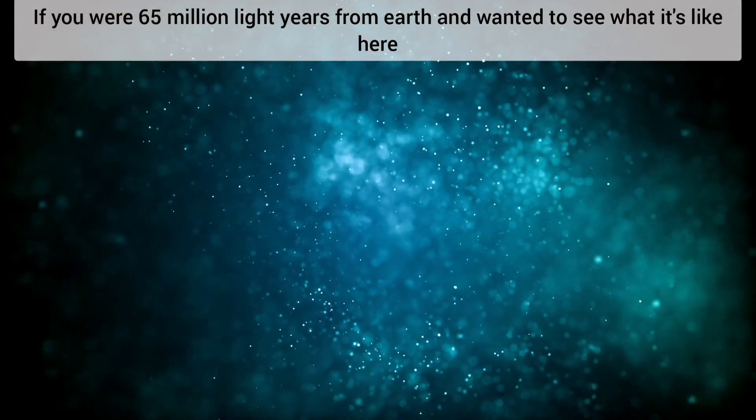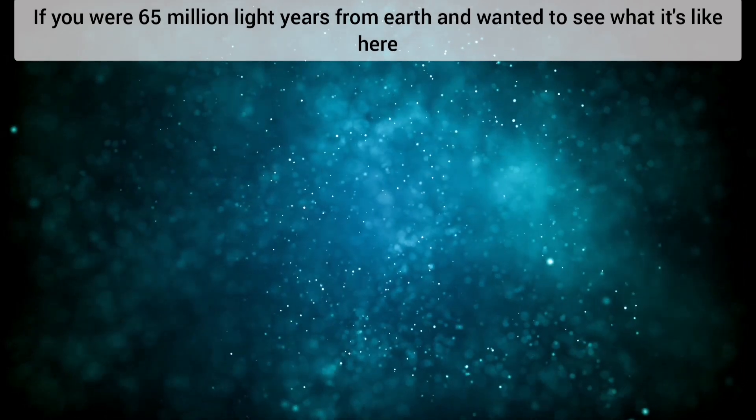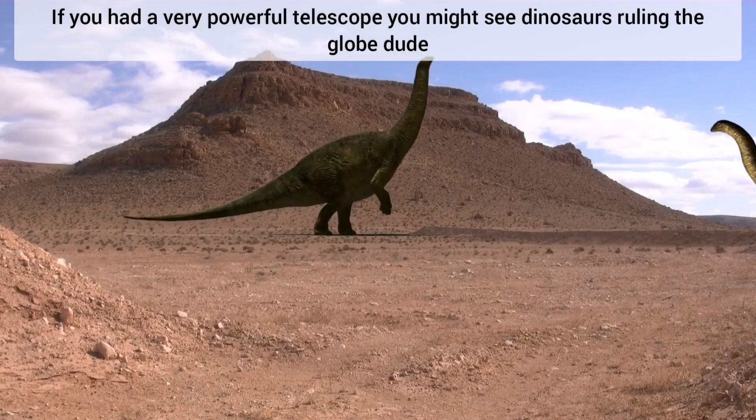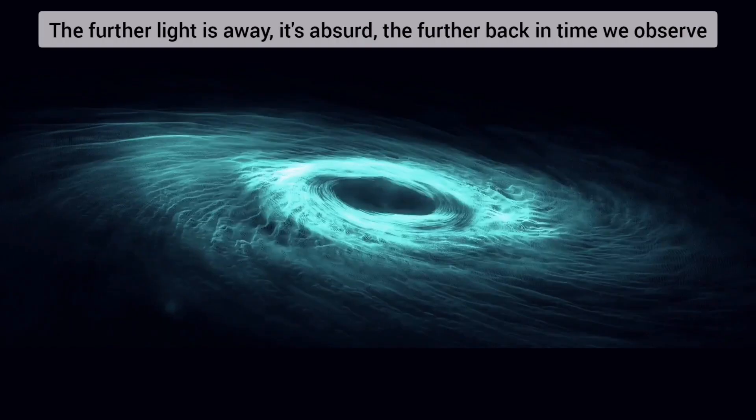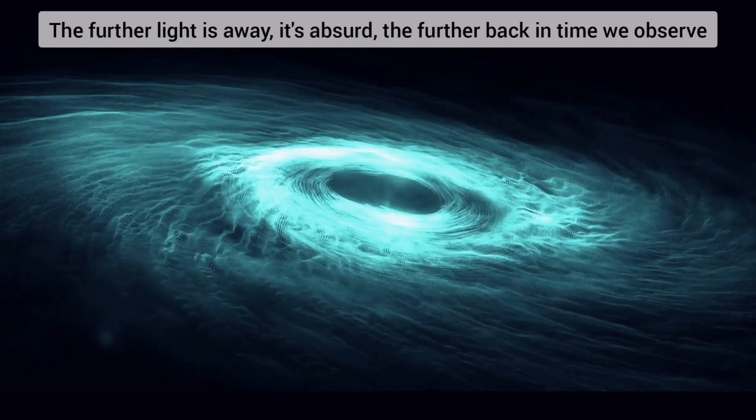If you were 65 million light years from Earth and wanted to see what it's like here, if you had a very powerful telescope, you might see dinosaurs ruling the globe. The further light is away it's observed, the further back in time we observe.